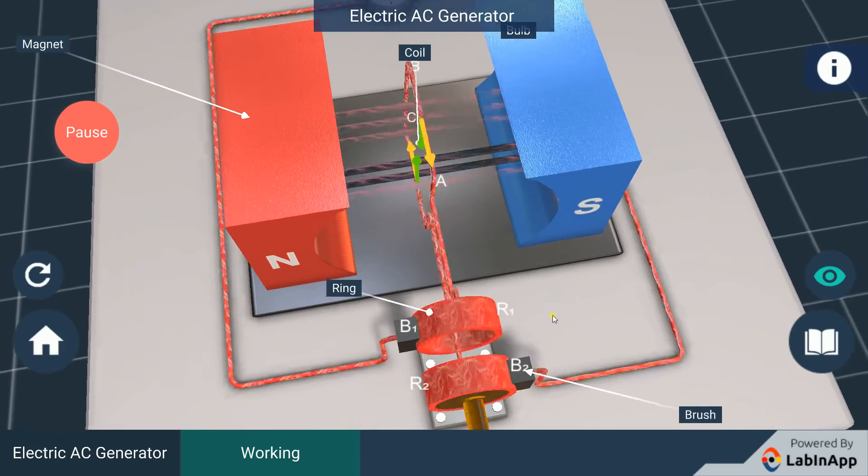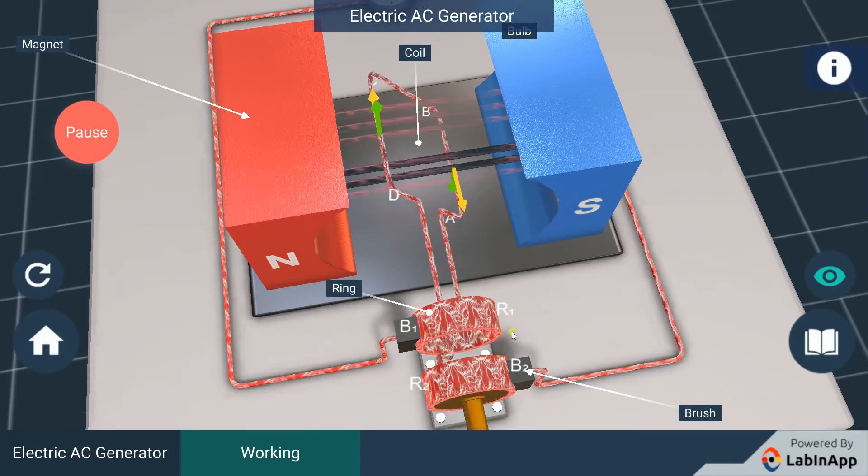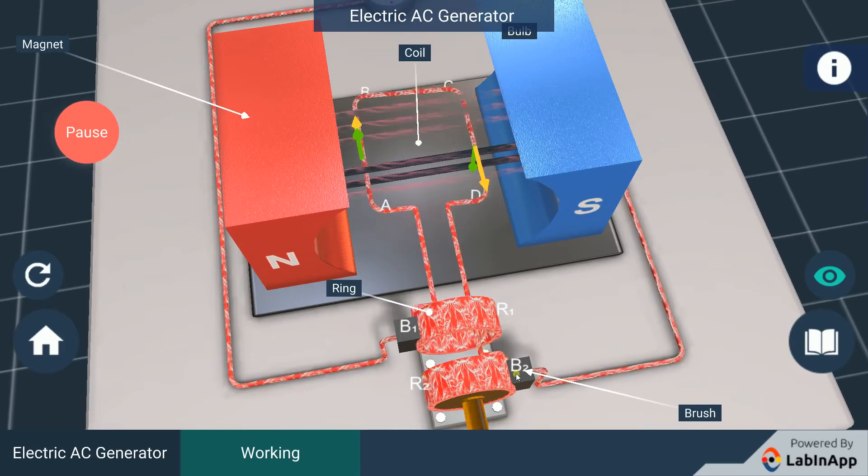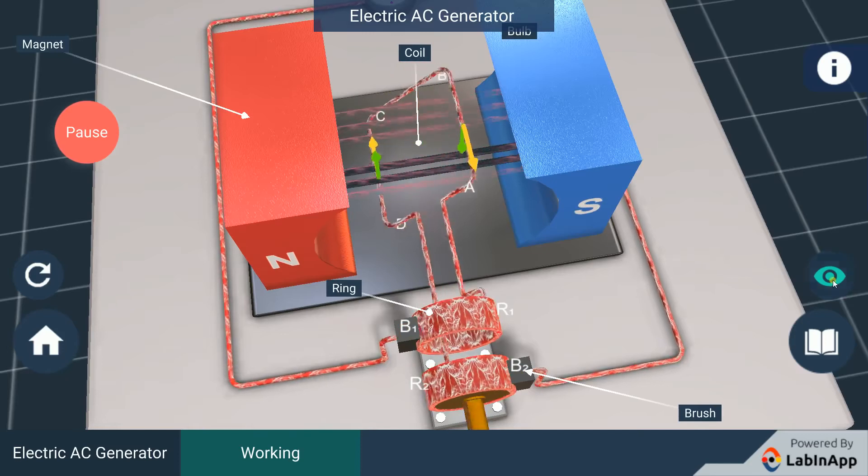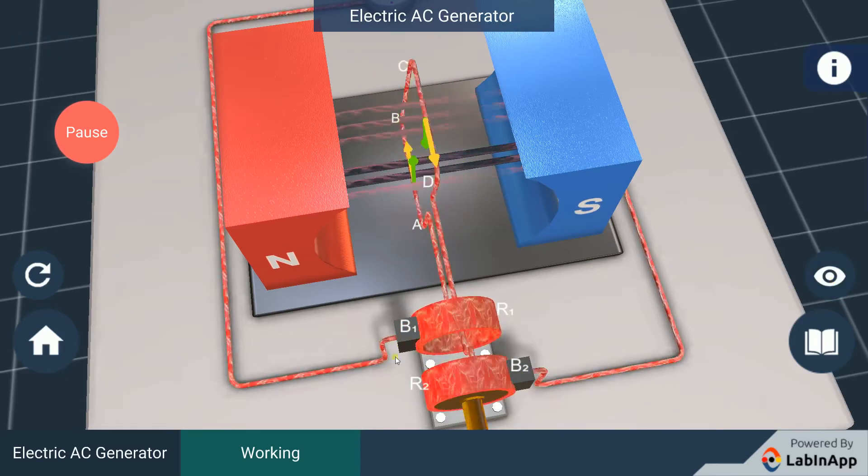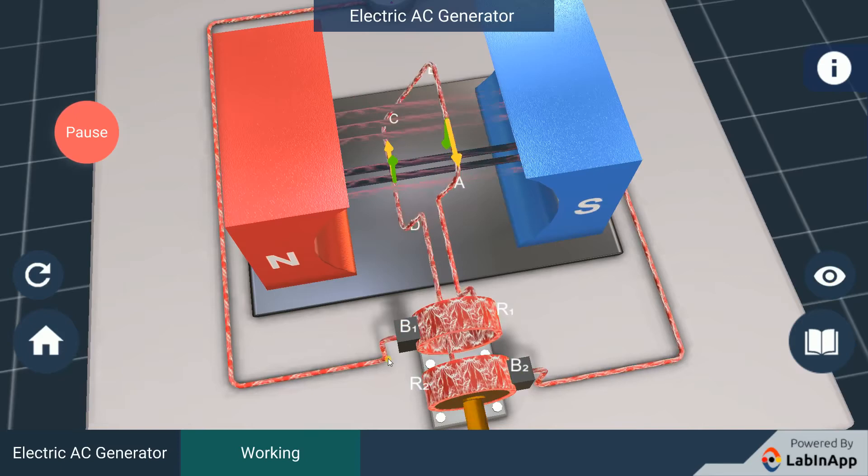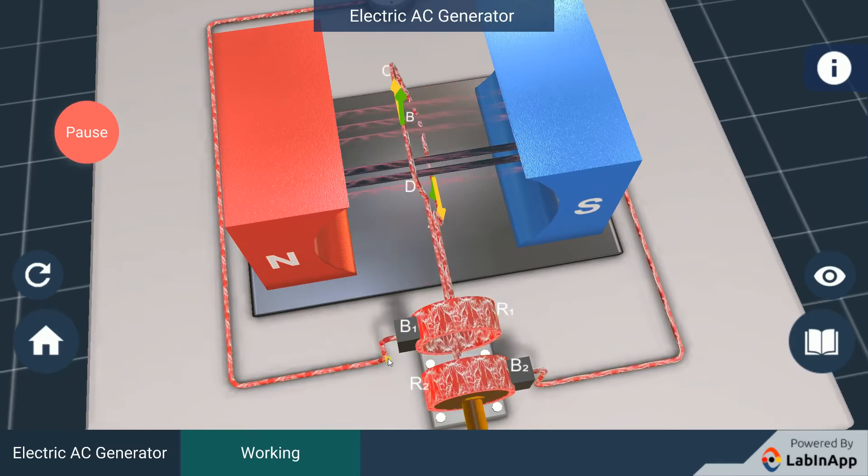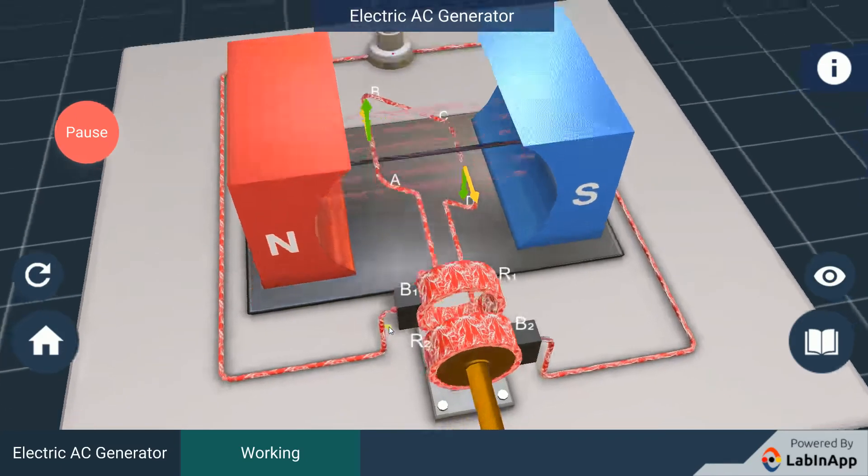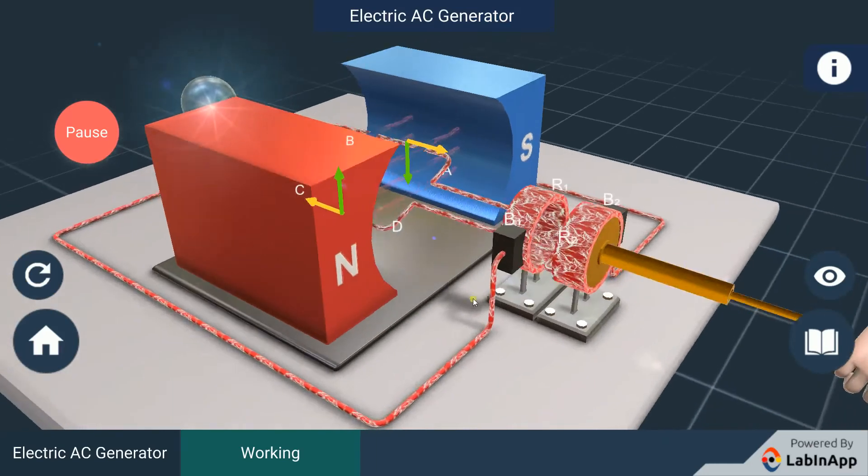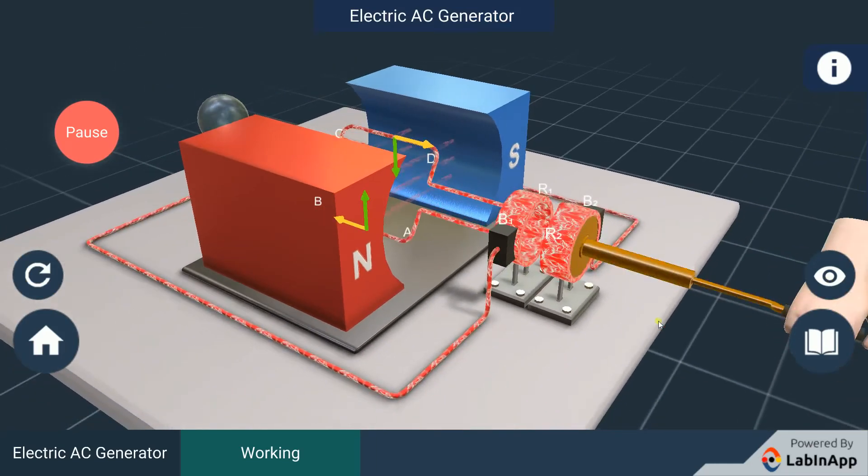The two conducting stationary brushes B1 and B2 are kept pressed separately on the rings R1 and R2 respectively. The two rings R1 and R2 are internally attached to an axle.